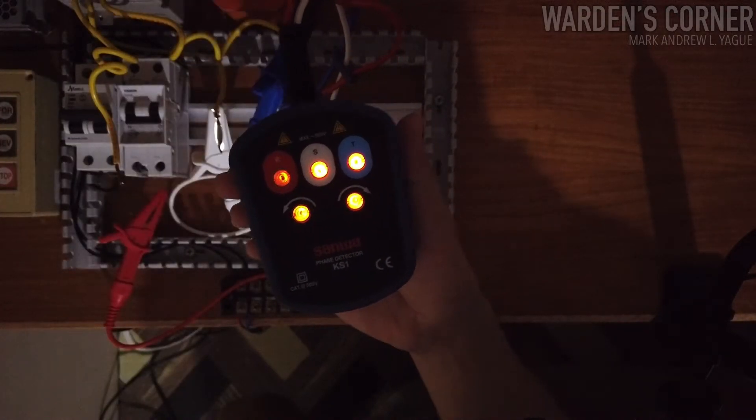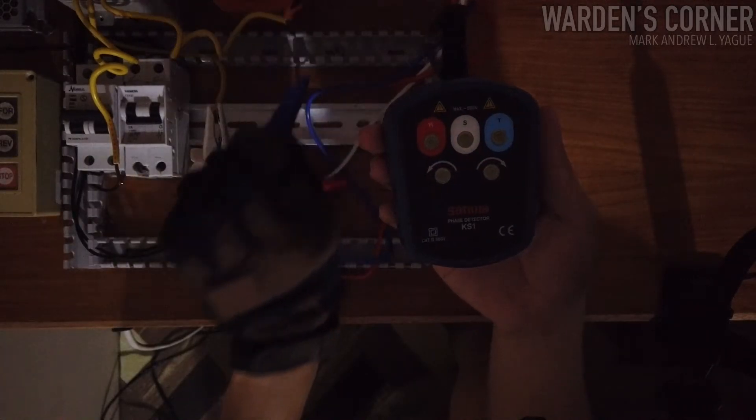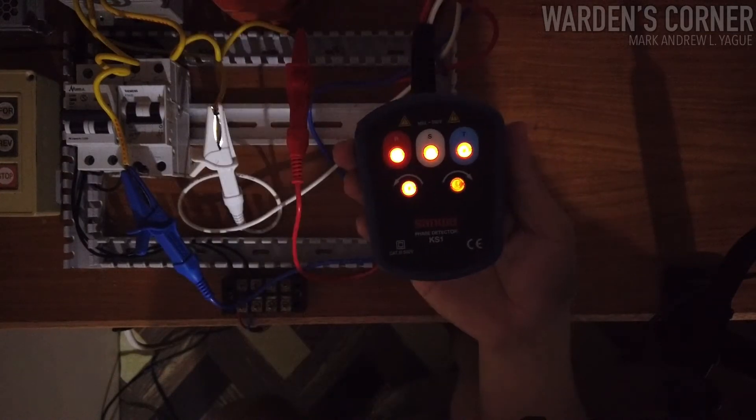Note, when fuse is broken, indicators R or T are on. If we are going to interchange line 1 and line 3, it will give us a counterclockwise or reverse rotation.